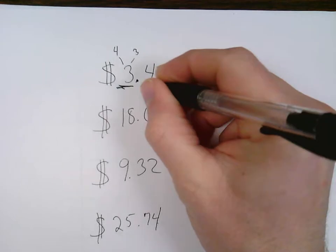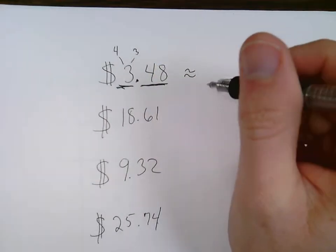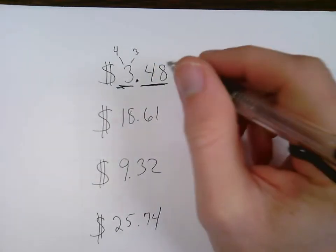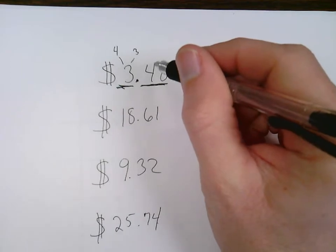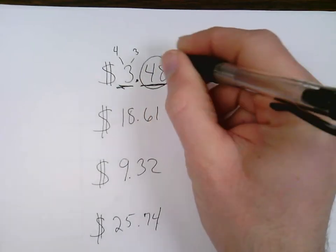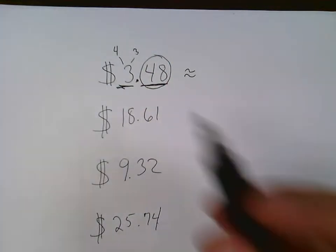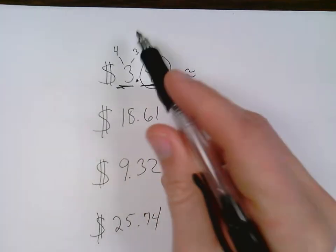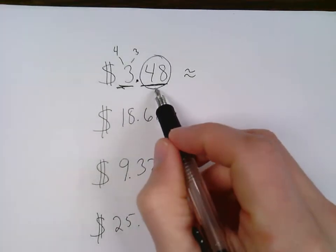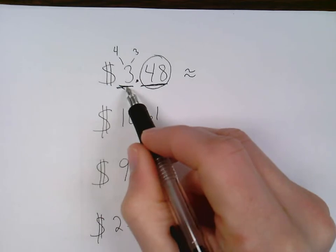Now if in the cents portion of our money amount, if that is above 50 cents, and I'll circle this, if that's above 50 cents, the underlined part goes up one. If it's below 50 cents, the underlined part stays the same.